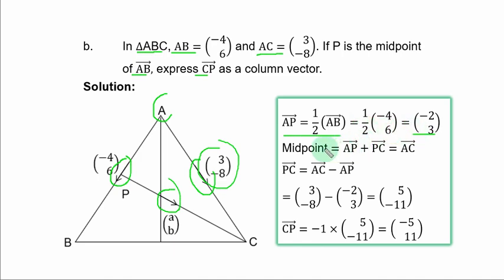Midpoint. The midpoint is AP plus PC. That is vector AP plus vector PC, and that is equal to vector AC. So for us to get PC first, you have to make vector PC the subject.